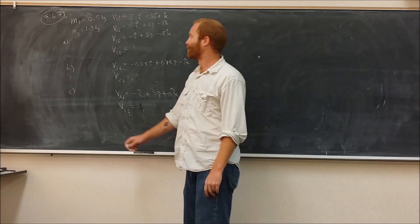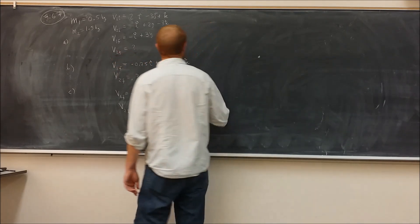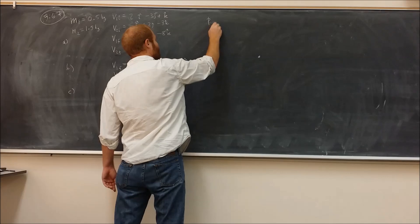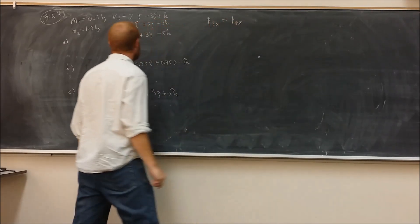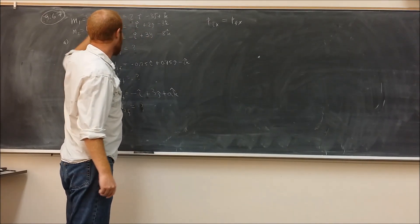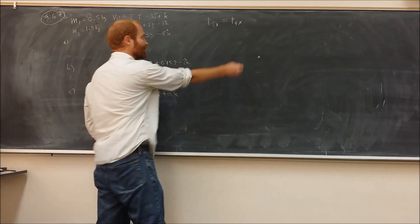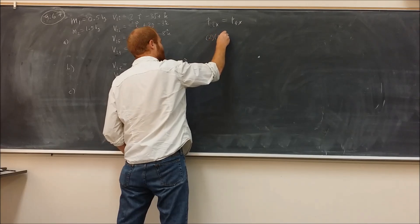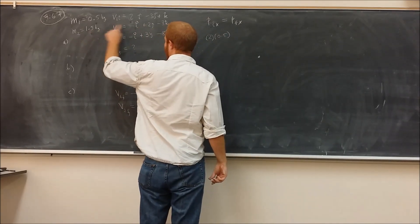So in order to find out what the x component of V2F is, we can say that the momentum in the x direction initial should be equal to the final momentum in the x direction. So in this case, the momentum in the x direction for this particle will be 2 times 0.5. I'm going to suppress the units only because there's a lot of calculations in this. So the initial momentum here is going to be 2 times 0.5. The x momentum for V2 is going to be 1.5 times negative 1.